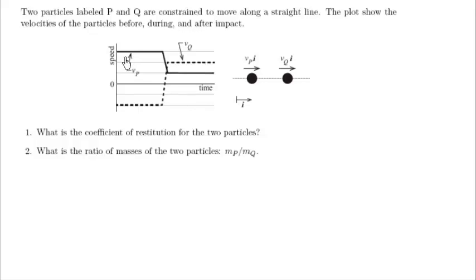And you notice initially P is positive, which means it's moving to the right, Q is negative, which means it's moving to the left. So these two particles are going to come smack into each other, then bounce off each other, and the final velocities after impact are shown here.